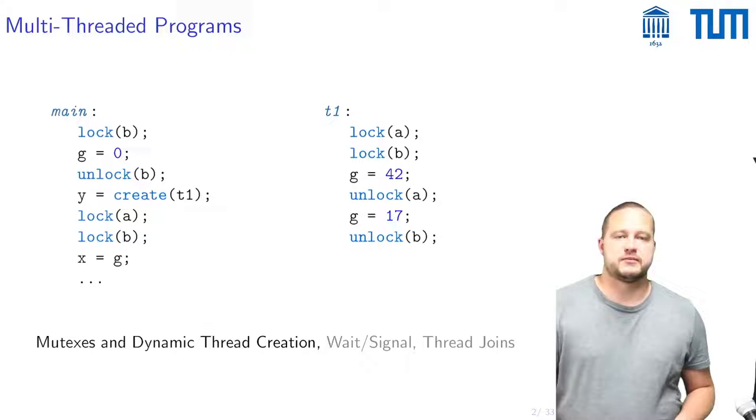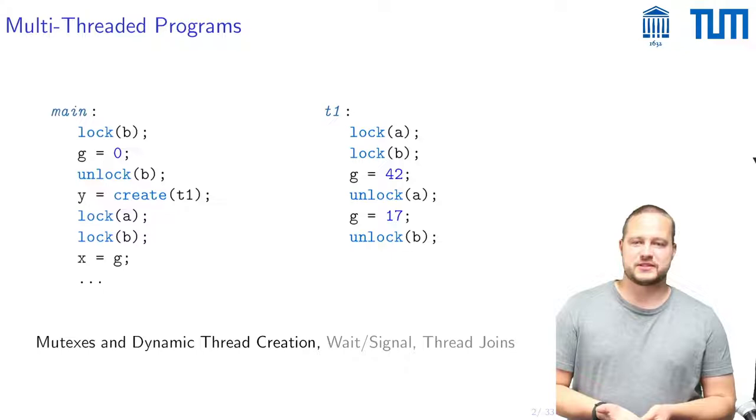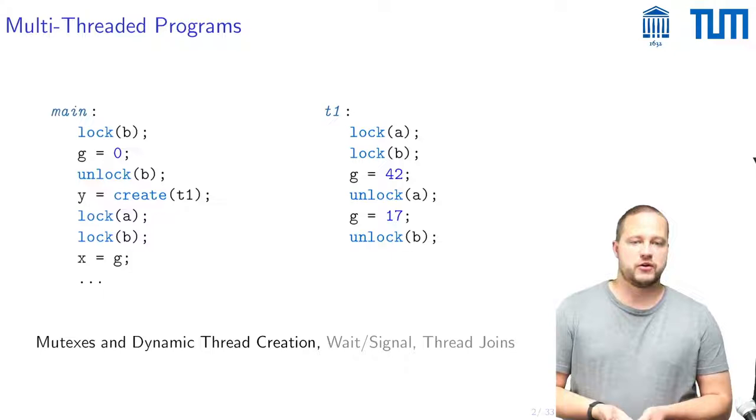Most programs nowadays are multi-threaded so one wants to analyze them. What makes this complicated is that multi-threaded programs often use mutexes and dynamic thread creation. They might use complicated control flows such as waiting and signaling and quite often they also have thread joins.